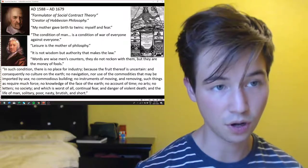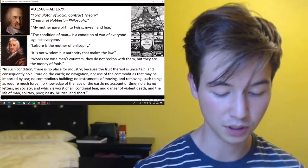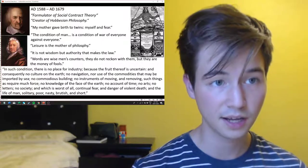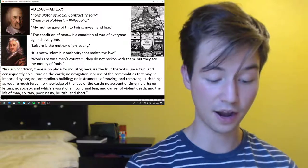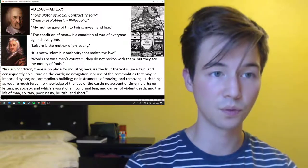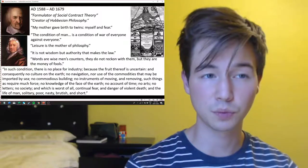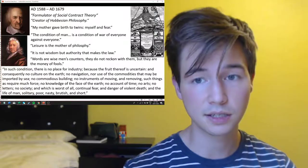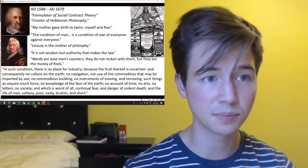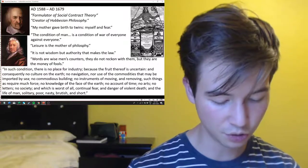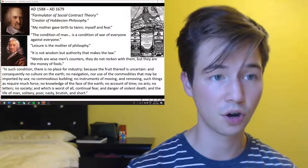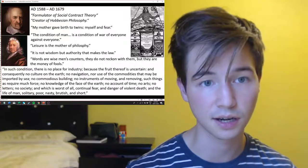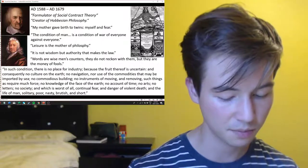He wrote a book called Elements of Law which he dedicated to William, probably one of his first pieces of writing. The Cavendishes were actually financing the king's army during the Civil War, so despite him not working directly for the monarch, he was spending time with a family that had quite strong sympathies towards the monarch.